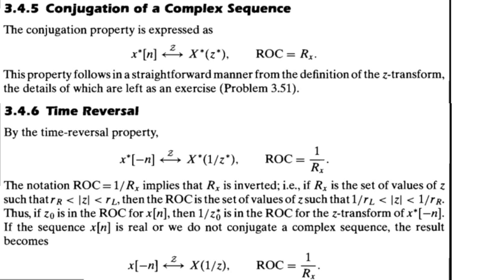However, if x(n) is real, for a real sequence x(n), x(n) and x conjugate of n will both be the same. So we have only time reversal, meaning x(−n). You need to understand that if a signal is real, we do not conjugate it because the conjugate of a real sequence will be the same. So for x(−n), the Z-transform will be X(1/Z), and the region of convergence will be the opposite: 1/Rx.